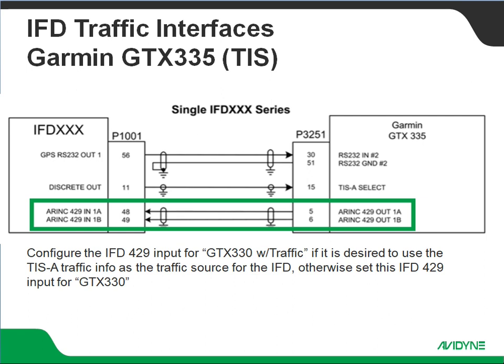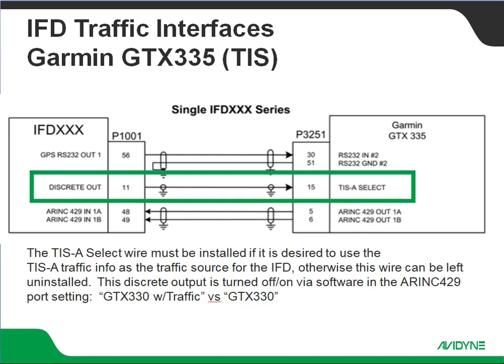Otherwise we're going to set that to regular GTX 330. The big differentiator is if we have some other traffic device on board — some other ADS-B receiver or active traffic system — we're going to set that to straight GTX 330. Only if we're using the TIS traffic from the GTX would we set that to GTX 330 with traffic. If we are going to use that TIS traffic from the GTX 335, we're going to have to wire up the TIS A select wire as well; otherwise that can be left uninstalled. That discrete output is going to be turned off or on via software in the ARINC 429 port setting — GTX 330 with traffic versus straight GTX 330.